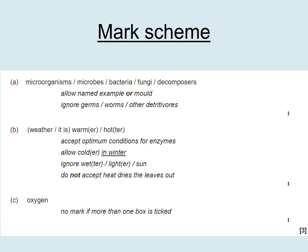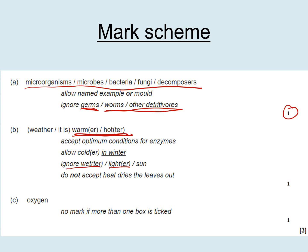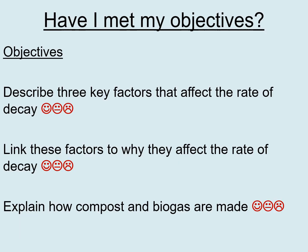Here are your answers. Question A: the answer is microorganisms, microbes, bacteria, or decomposers — any one of these gets you one mark. 'Germs' doesn't count as it's too colloquial, and worms or other detritivores don't count because we're looking for decomposers. Question B: it's warmer or hotter — decay occurs faster in warm conditions. Answers about wetter, lighter, or sunnier don't count because on sunny days in winter it's not actually warm due to less infrared radiation. Question C: the answer is oxygen, worth one mark. Write down how many marks you got out of three.